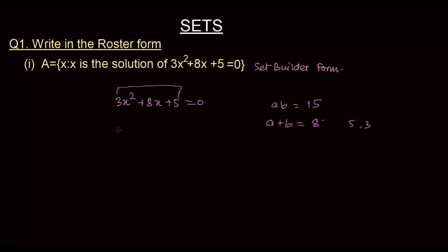That's how I split the middle term. So, 3x² + 3x + 5x + 5 and it implies that I can take out 3x from here. I am left with x + 1 plus 5 into x + 1 is equal to 0.